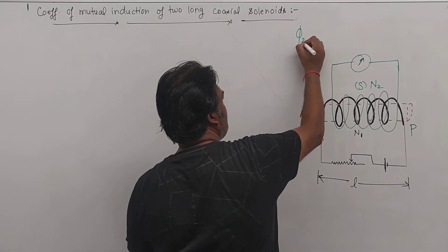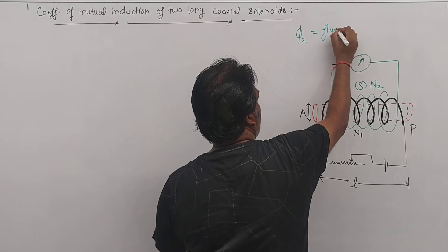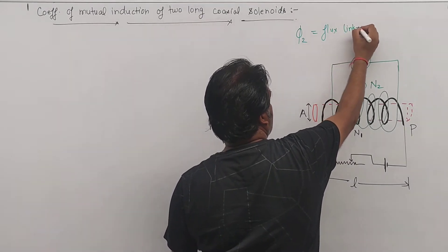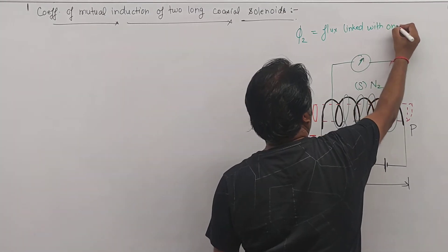And one more term we will be needing: phi2 is equal to flux linked with one turn of coil S.